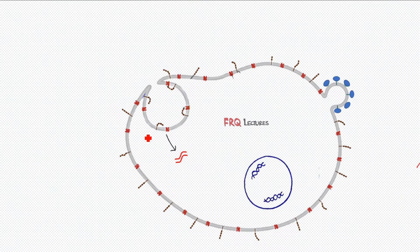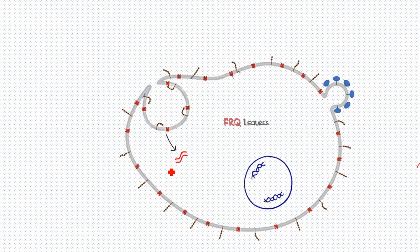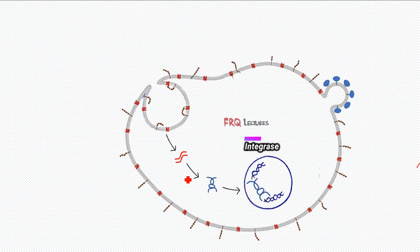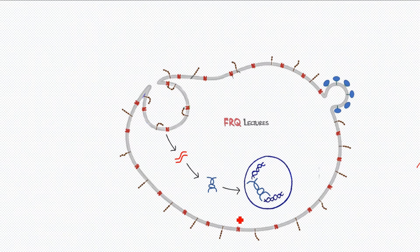After fusion, HIV starts releasing its contents within the cell. We can see two identical positive-sense RNAs here. Then comes reverse transcription — this special kind of transcription where RNA is transcribed into DNA, giving us viral DNA. This viral DNA then enters our nucleus and integrates with our DNA. This integration step is possible due to an enzyme known as integrase, while the previous step was possible due to reverse transcriptase.